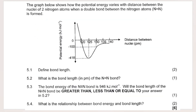Our first question asks for a definition, but before we get into that, let's read the information provided and look at the graph. This is a very common graph in this section of work, so it's very important that you know how to interpret it. The graph shows how potential energy varies with distance between the nuclei of two nitrogen atoms when a double bond is formed.